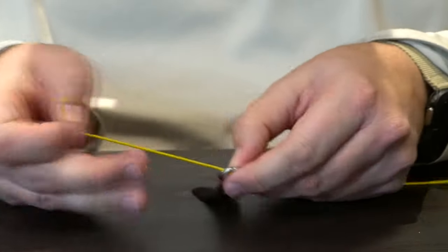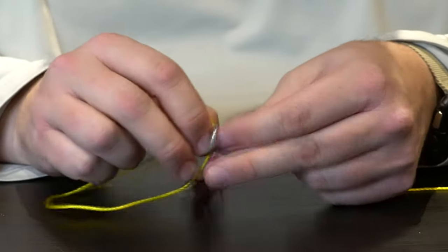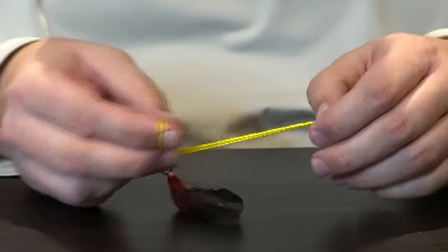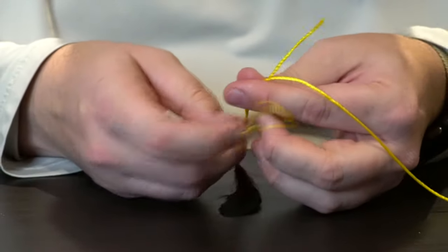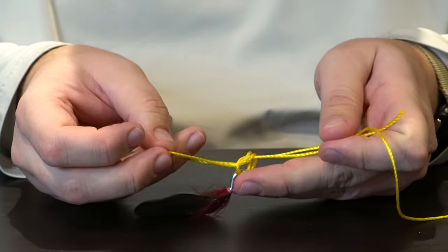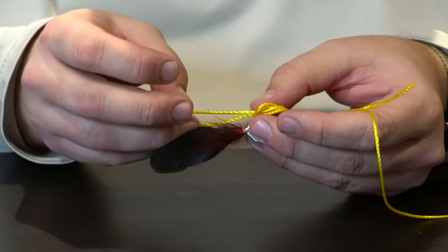Once I have that threaded, I'm going to take this line and tie a simple overhand knot without pulling it completely tight.